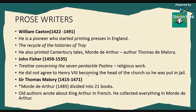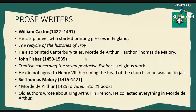John Fisher, 1459 to 1535, wrote Treatise Concerning the Seven Penitential Psalms and other religious works. He did not agree to Henry VIII becoming the head of the church, so he was put in chains. Henry VIII wanted to divorce his wives and send a letter to the Vatican for approval. Since the Pope wouldn't cooperate, Henry made the king the head of the church — founding the Anglican Church — and appointed his own Archbishop of Canterbury.